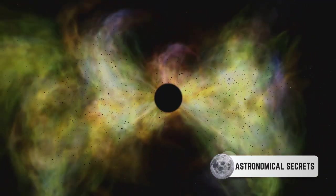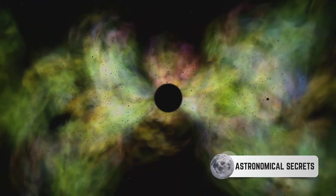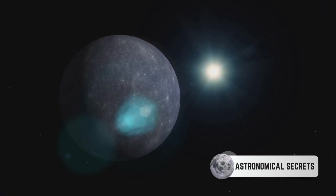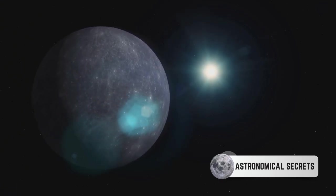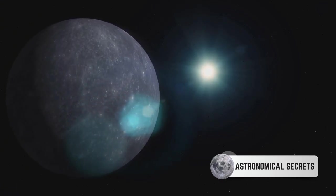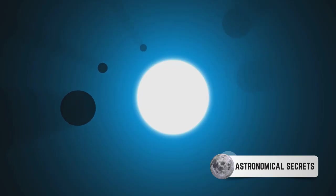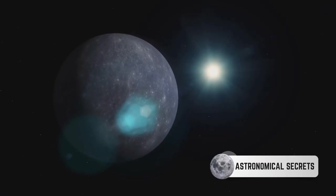Whether they fade out as white dwarfs, explode in a supernova, or collapse into a black hole, each star's destiny is written in its mass and size. Moreover, eclipsing binary stars can also help scientists test and refine theories about stellar structure and evolution. They provide a way to verify our understanding of how stars work, pushing the boundaries of our cosmic comprehension.